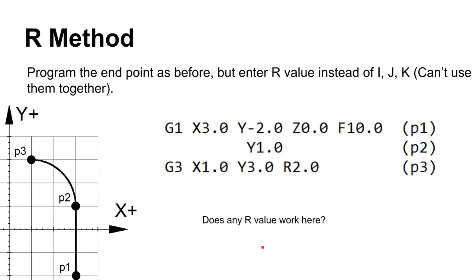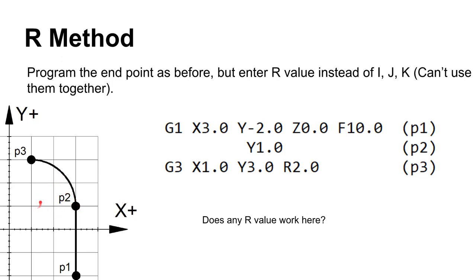The R method is a lot easier if you have your choice. First go to P1 at X3, Y negative 2, Z0, then a G1 move to Y1 brings us to P2. Then G3 — counterclockwise — commands the end point at X1, Y3, with a radius R2. We don't have to calculate where the center is; the controller does those calculations. We've just asked for a radius of two.